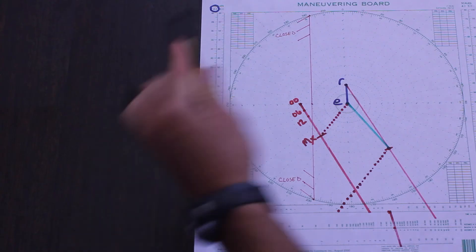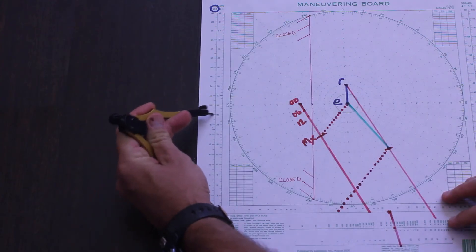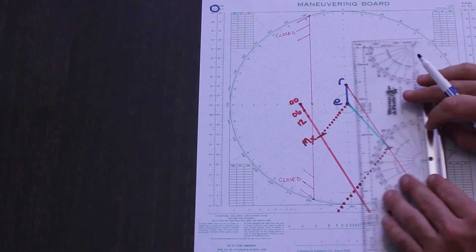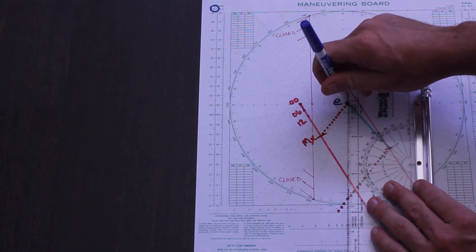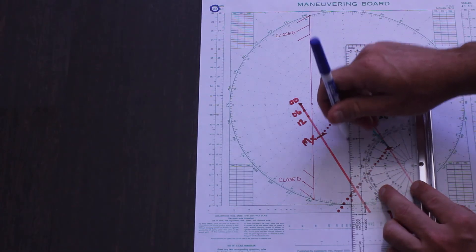We just need to pick a point and read off the necessary course and speed, same as an avoidance problem. So let's bring up the engine RPM and see what course we need to steer at 18 knots to intercept our mysterious contact. We can set our intercept speed to 18 and see where the arc crosses the new relative motion vector.